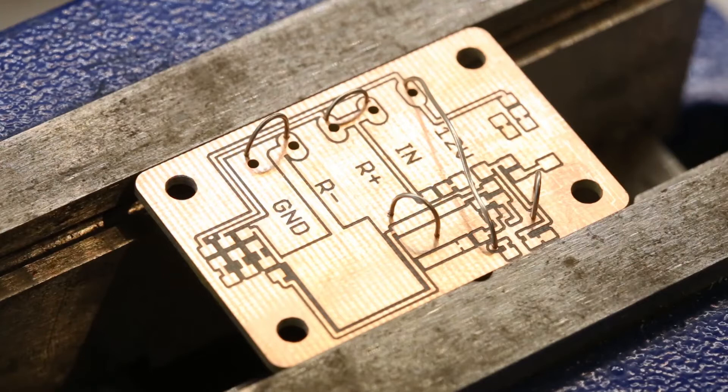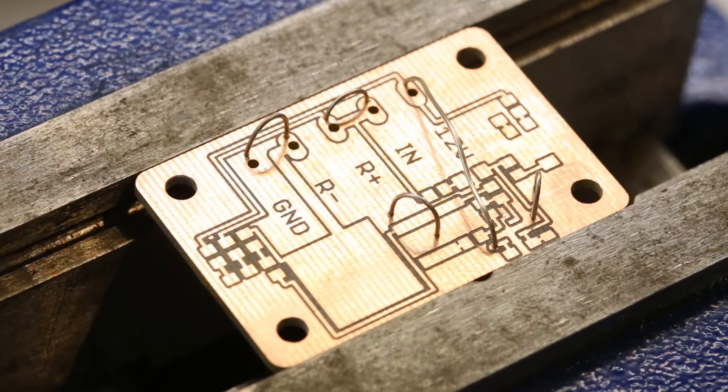Once I am done with that step, the board will look just like here. Every single via now has a piece of copper wire going through it. In the next step I will solder this wire onto the board on both sides.